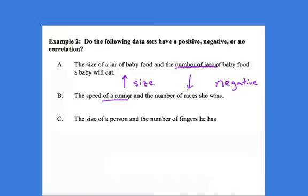All right. The speed of a runner and the number of races she wins. If I increase the runner's speed, guess what? Run faster, most likely you're going to win more races. That's positive. One increases, the other increases.